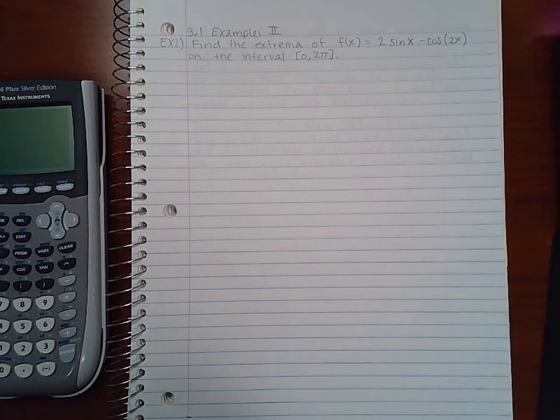This is 3.1 examples part 2. It says find the extrema of f(x) = 2sin(x) - cos(2x) on the interval 0 to 2π.